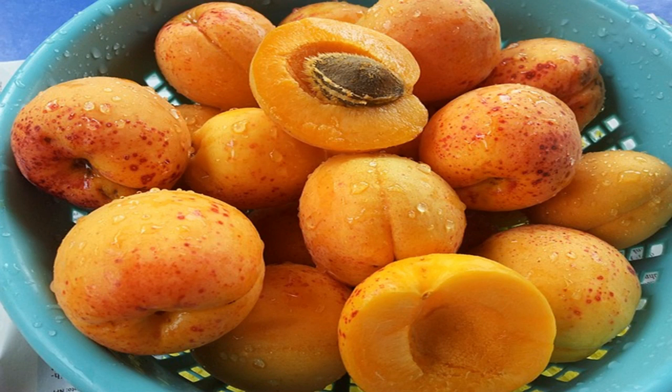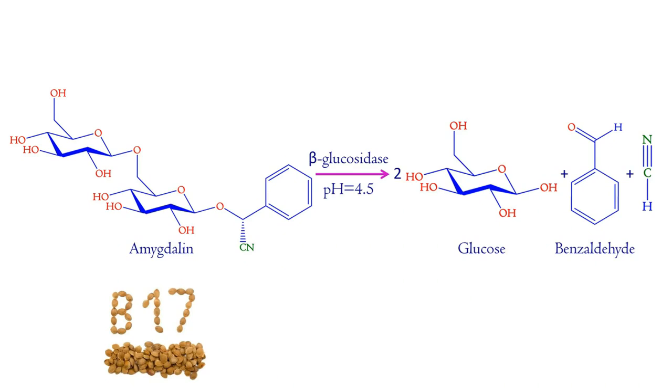Some naturally occurring compounds do not contain a carbonyl group, but they are converted to aldehydes and ketones by enzymes in cells. One such compound is amygdalin, known more commonly as laetrile. Amygdalin is present in the seeds and pits of apricots, peaches, and wild cherries and bitter almond. In the body, amygdalin is converted to two aldehydes, glucose and benzaldehyde. Also formed as a byproduct is hydrogen cyanide, HCN, a toxic gas.